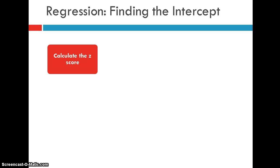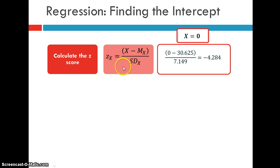So we calculate the z score for x. And we'll use this particular formula here where we have the mean of x, the standard deviation of x. And that will give us the z of x. In our case, we're saying, OK, x equals 0. So 0 and here's our mean of x is 30.625. And we divide that by 7.149. And we get a negative z score of 4.284.